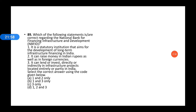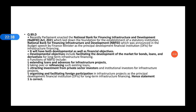Next question: Which of the following statements are correct regarding the National Bank for Financing Infrastructure Development (NBFID)? First: it is a statutory institution aimed at the development of long-term infrastructure financing in India. Second: it can raise money in Indian rupees as well as in foreign currencies. Third: it can lend or invest directly or indirectly in infrastructure projects located entirely or partially in India. All three options are correct.